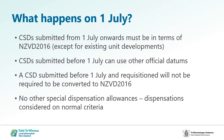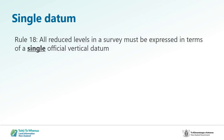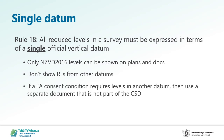The expectation is that NZVD 2016 is used for defining height limited boundaries on all CSDs after the 1st of July. Coming back to Rule 18: it says all reduced levels in a survey must be expressed in terms of a single official vertical datum. This means that only NZVD 2016 levels can be shown on plans and documents in the CSD — RLs from other datums cannot be shown. If a TA consent condition requires levels in another datum, you may need to use a separate document not part of the CSD to satisfy those conditions.